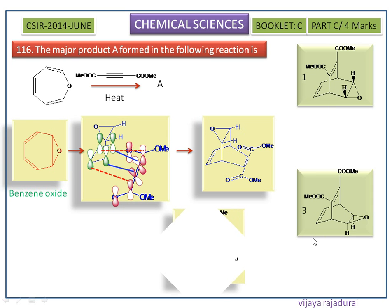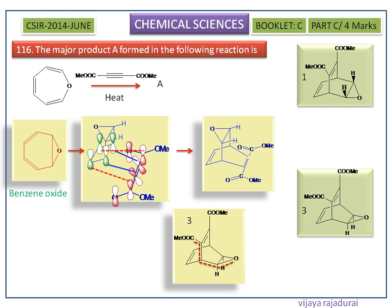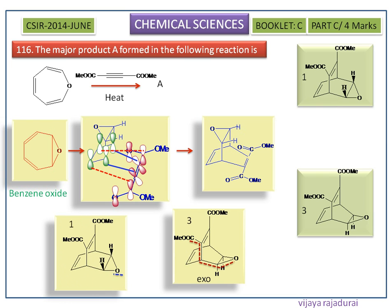Here we have to select the correct answer between the first and third options, so we consider the third option. We need to determine whether it is exo or endo. If the groups are oriented towards the highest-numbered bridge, it is described as exo. Here the oxygen is oriented towards the highest-numbered bridge, so it is called exo. In the first option, the oxygen is oriented away from the highest-numbered bridge, so it is called endo.